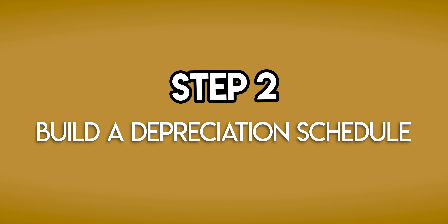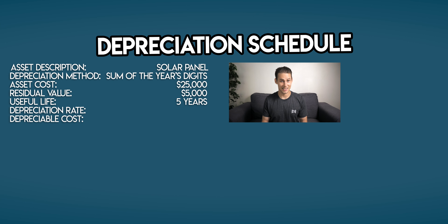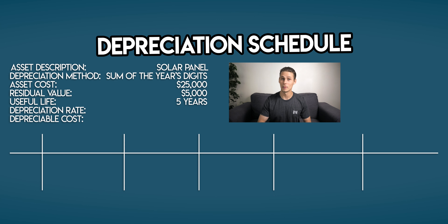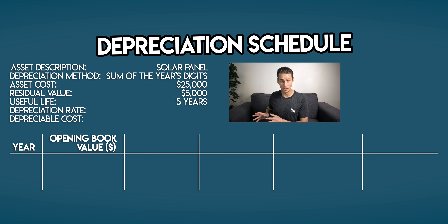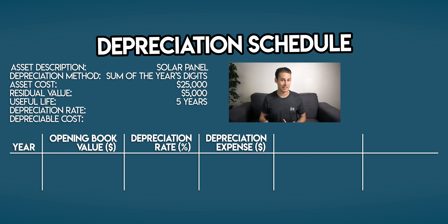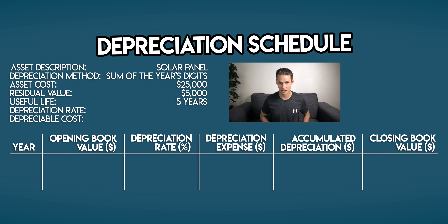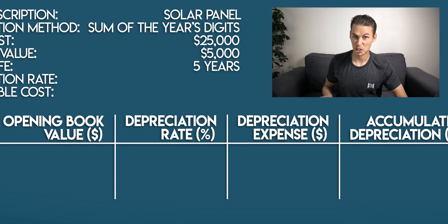Step two: build a depreciation schedule. The depreciation schedule is a table, and for the sum of the year's digits method it has six columns — one more than for the straight line and double declining balance methods. The columns are: year, opening book value, depreciation rate, depreciation expense, accumulated depreciation, and closing book value. The new one is depreciation rate — we're giving it its own column because it changes each year.